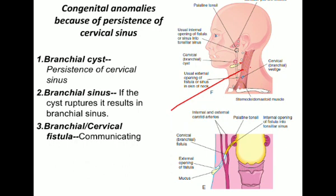If the cyst ruptures that will lead to formation of a branchial sinus. A branchial fistula or cervical fistula occurs when the sinus is communicating — between the pharyngeal cavity and the skin over the sternocleidomastoid muscle. If the sinus becomes communicating then it is called a branchial fistula or cervical fistula.